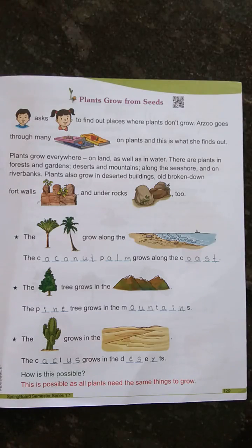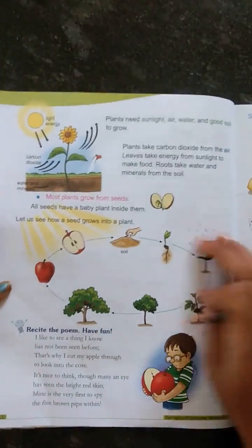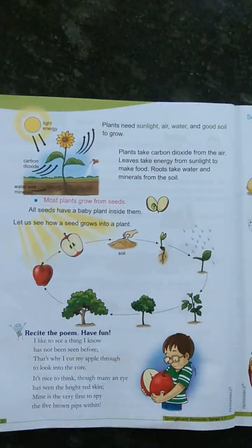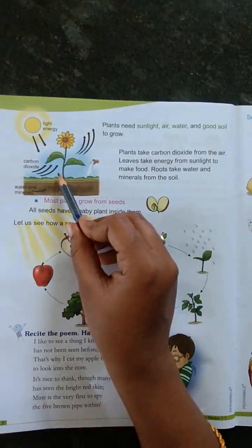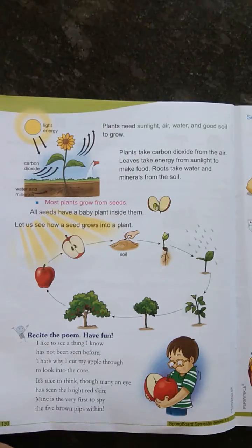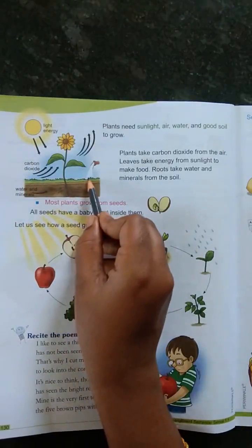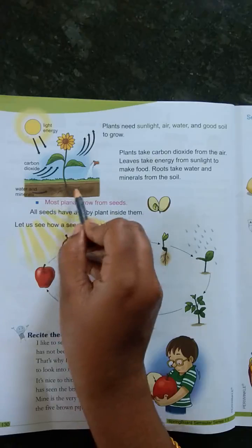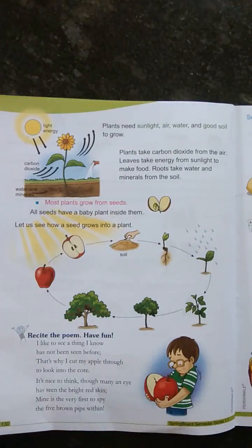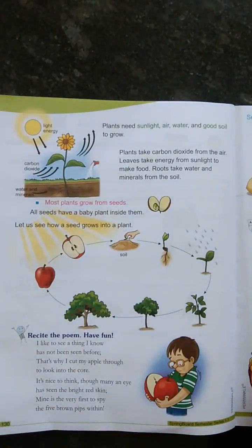How is this possible, children? Is it possible that all plants need the same things to grow? Plants need sunlight, air, water, and good soil to grow. Plants take carbon dioxide from the air. Leaves take energy from sunlight to make food. Roots take water and minerals from the soil.